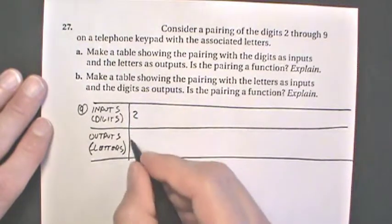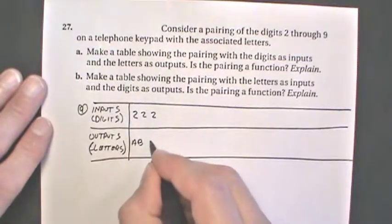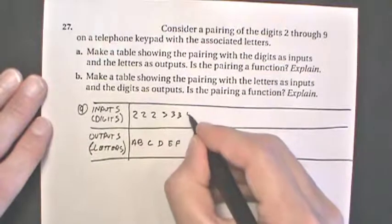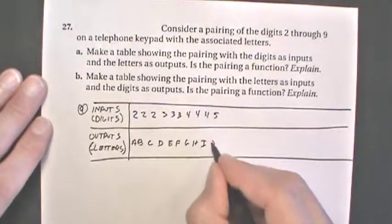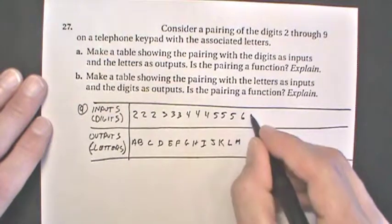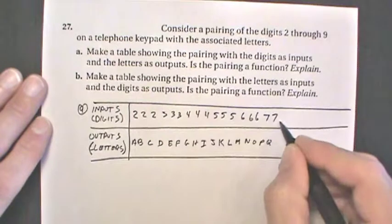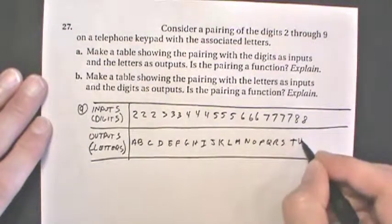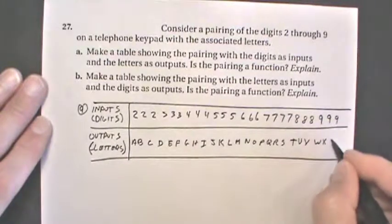So for input of 2, if you look at your keypad in the book here, you can get an A, 2 can give you a B, 2 can give you a C, 3 can be a D, 3 can be an E, 3 can be an F, 4 can be a G, 4 can be an H, 4 can be an I, 5 can be a J, 5 can be a K, 5 can be an L, 6 can be an M, an N, and an O, 7 can be a P, a Q, an R, and an S, 8 can be a T, a U, and a V, 9 can be a W, an X, a Y, and a Z.